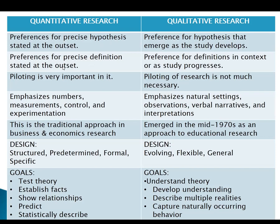Second difference: preference for precise definitions stated at the outset in quantitative research, whereas in qualitative research, preference is for definitions in context or as the study progresses. In quantitative research you have to define each and every term and theory in the beginning — everything should be clear from the start. In qualitative research, definitions can be given as the study moves on, which can lead to new theories.